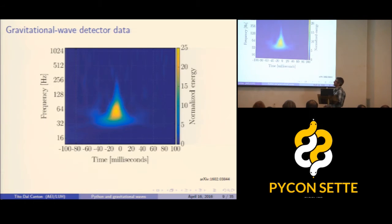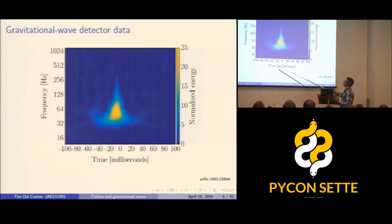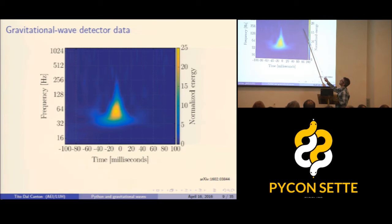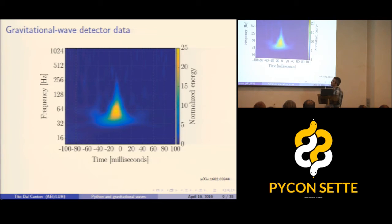You can also look at time-frequency plots of the data. This shows a fraction of a second in time over some frequency band around the most sensitive region. Most of the time you see the Gaussian noise background, but here is an instrumental transient called a 'blip glitch' — we have no idea where it comes from. It's in the data, it's not gravitational waves, and we have to deal with it somehow.